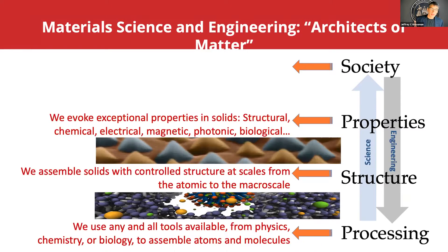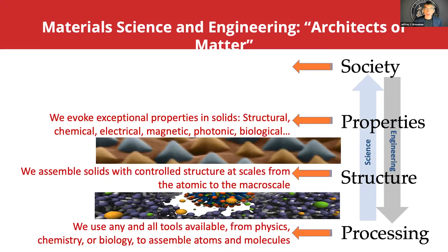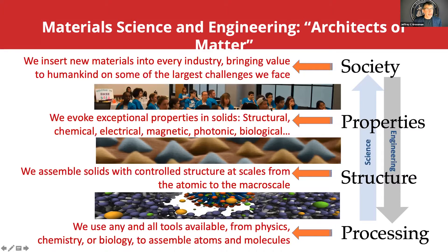We make structures that we control at scales all the way from the atom up to the macro scale. We build atoms and molecules and solids into structures in order to give us properties that we want — and those properties can be exceptional: structural, chemical, electronic, magnetic, photonic, and on and on. Why do we do that? Because we want to make an impact. Materials are important to every single industry, and they bring value to humankind and to some of the largest challenges that we face. The globe faces tremendous challenges, and so many of those challenges are bottlenecked by the choice of a different, more efficient, or less costly material. We need to make new materials to solve so many of the world's challenges.